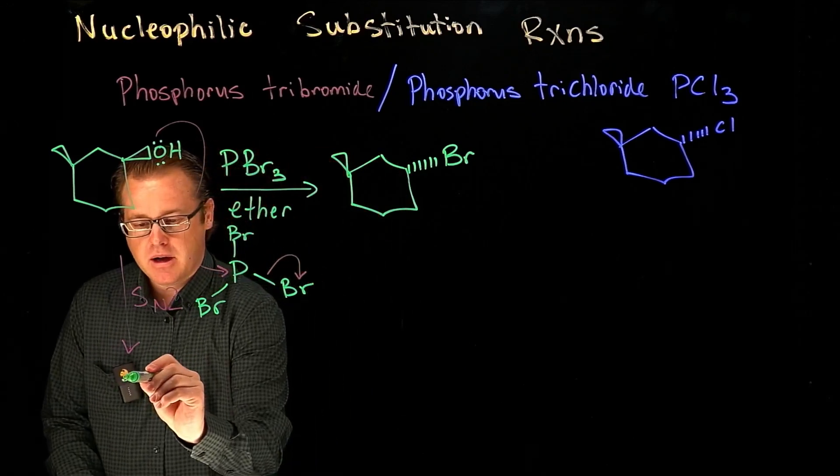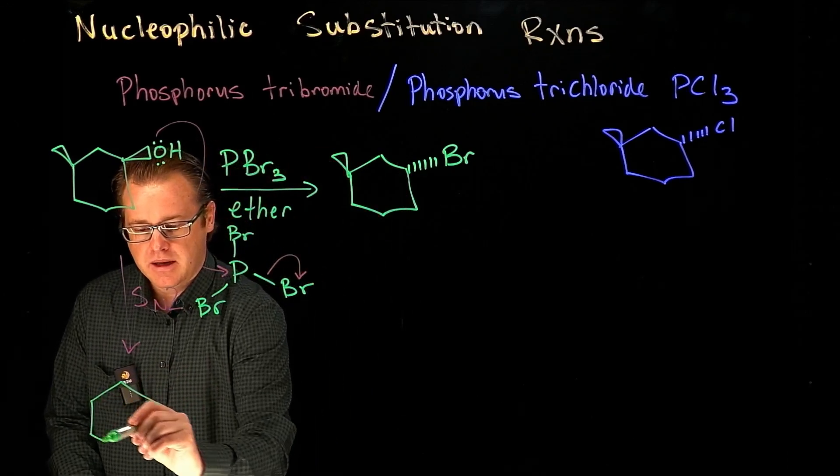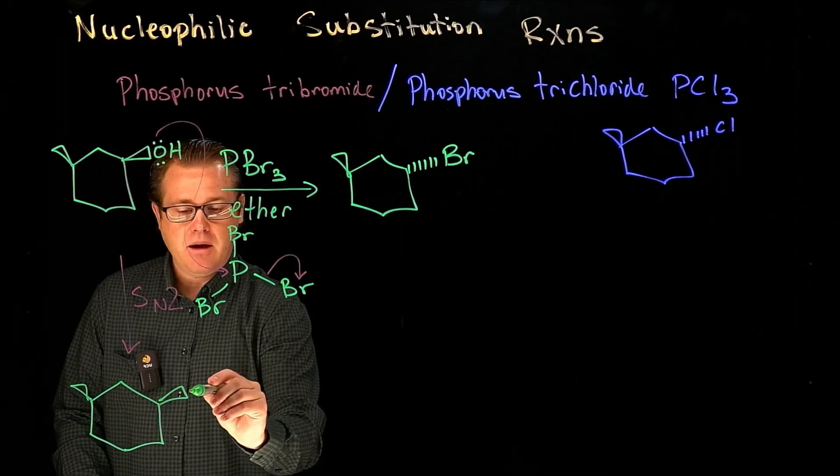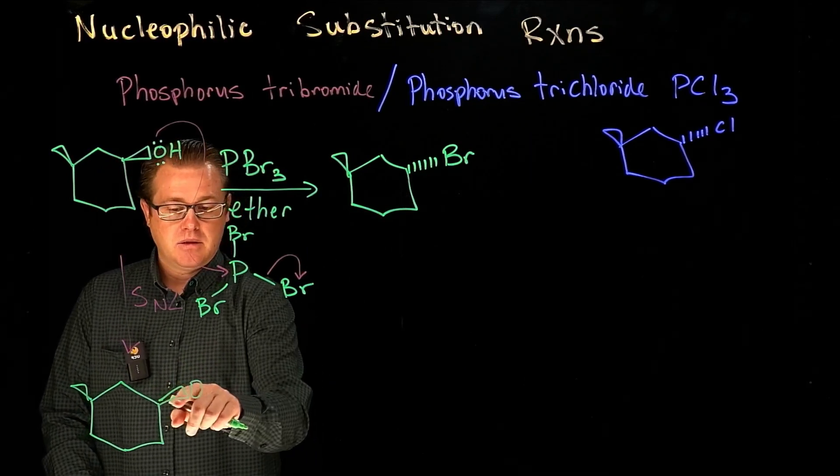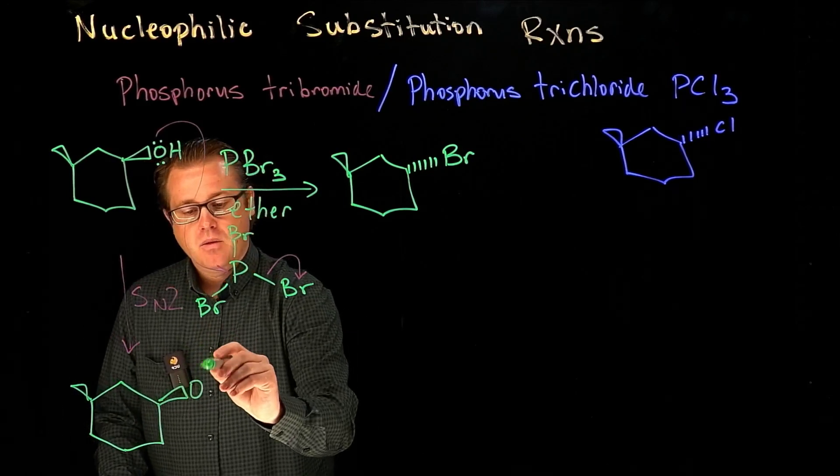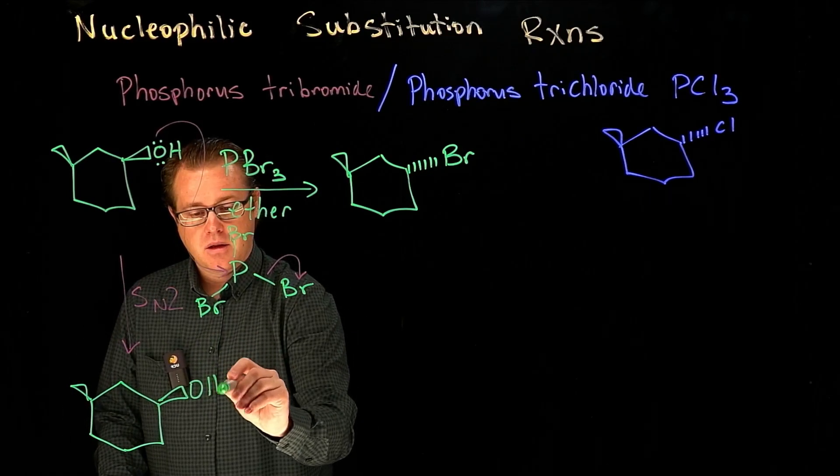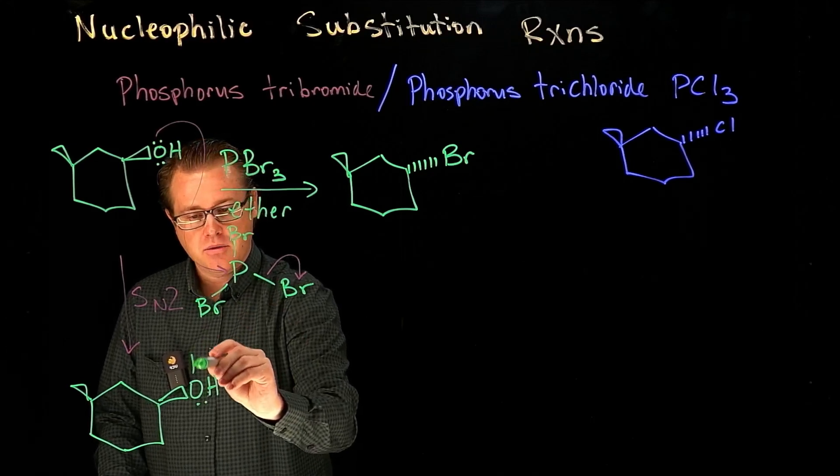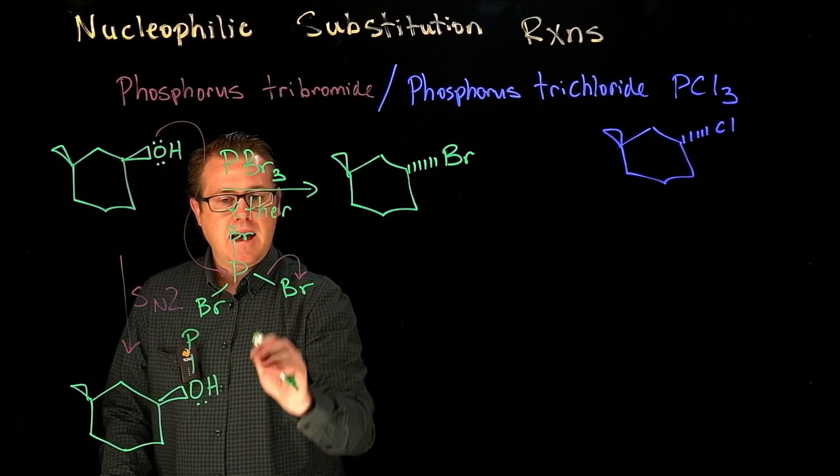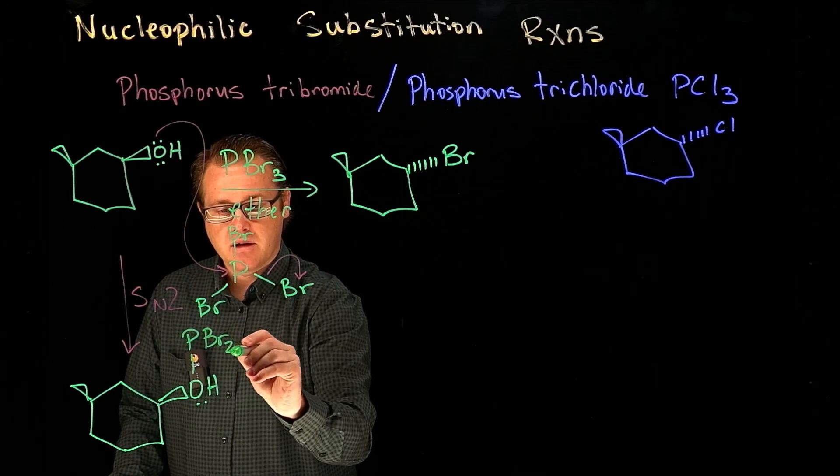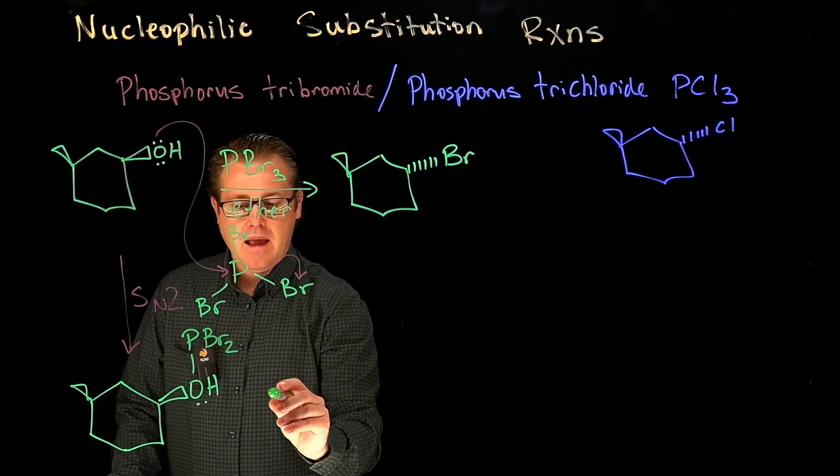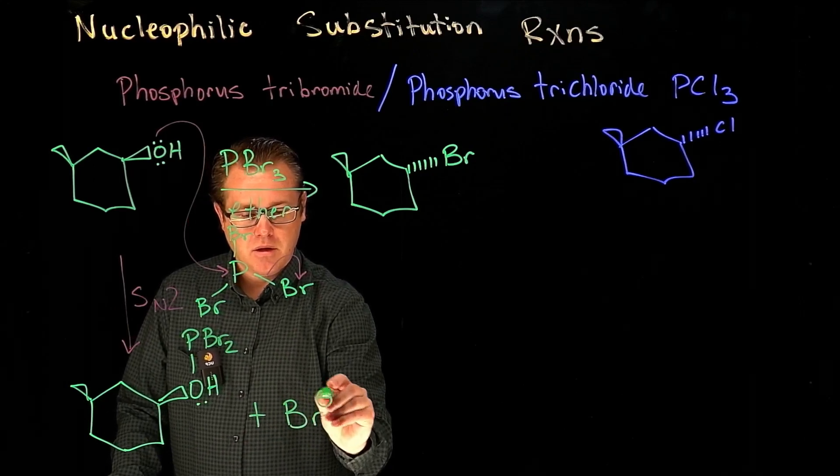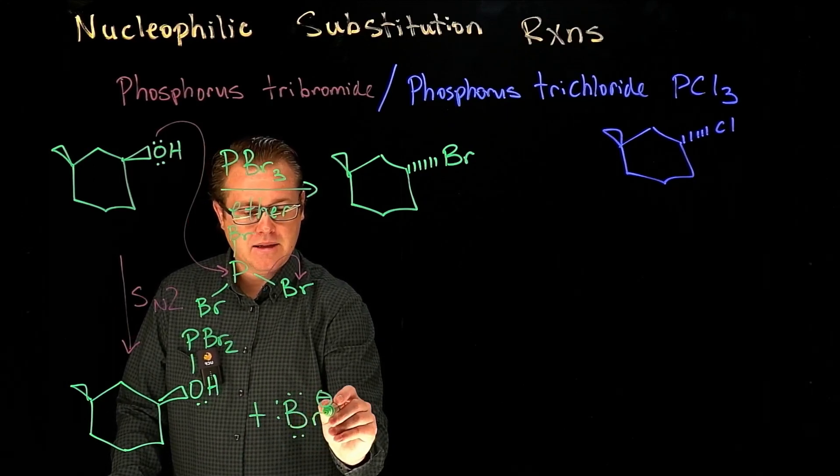That's going to give us an intermediate that looks like this. See how we still have the oxygen wedge? We used this lone pair to form a bond with the phosphorus. Now how many bromines are on that phosphorus? Two of them.